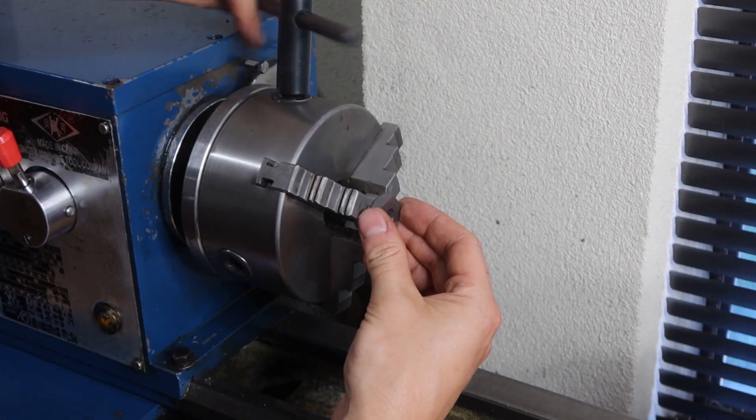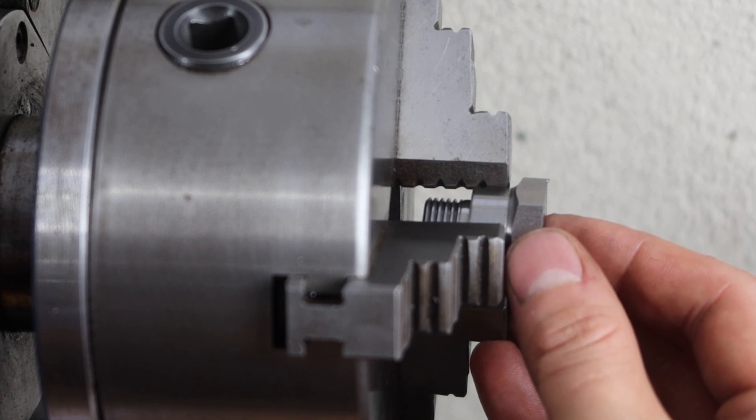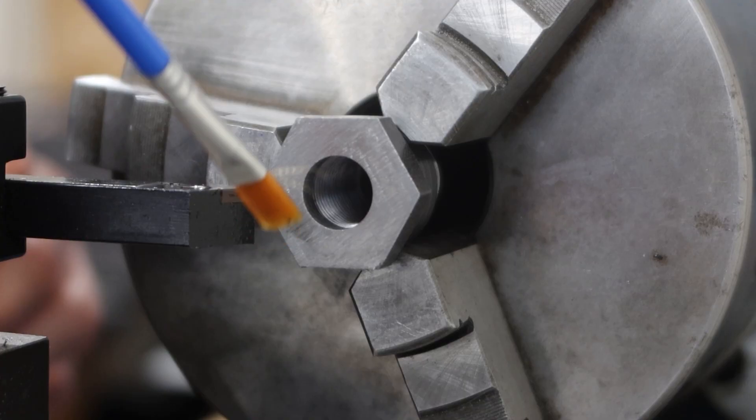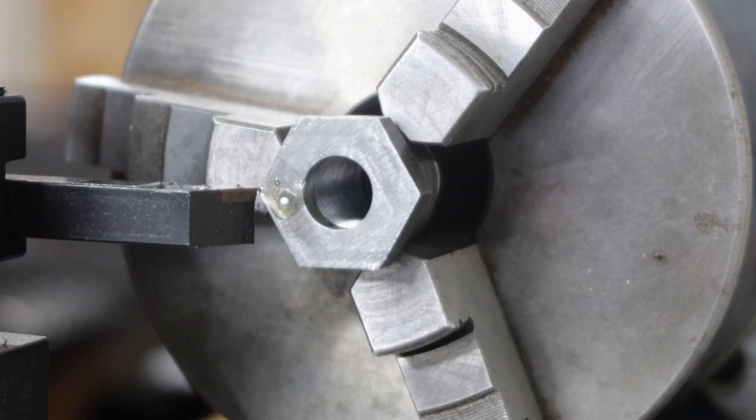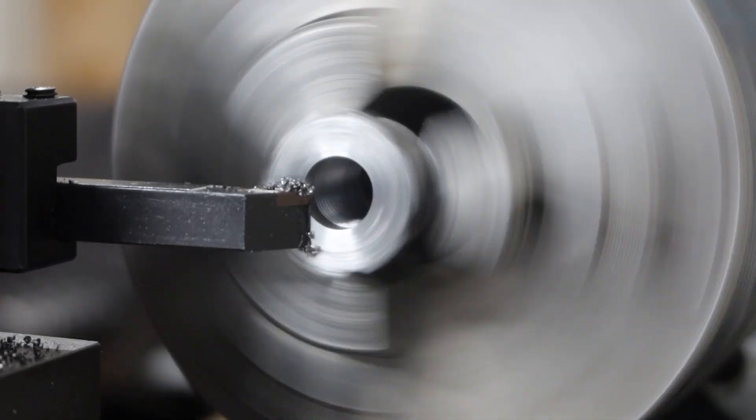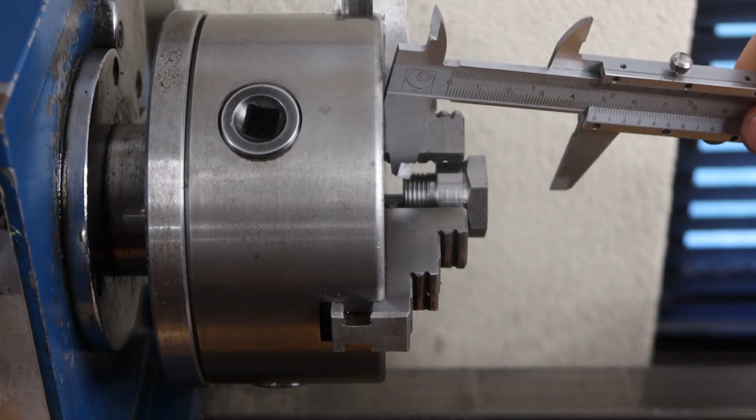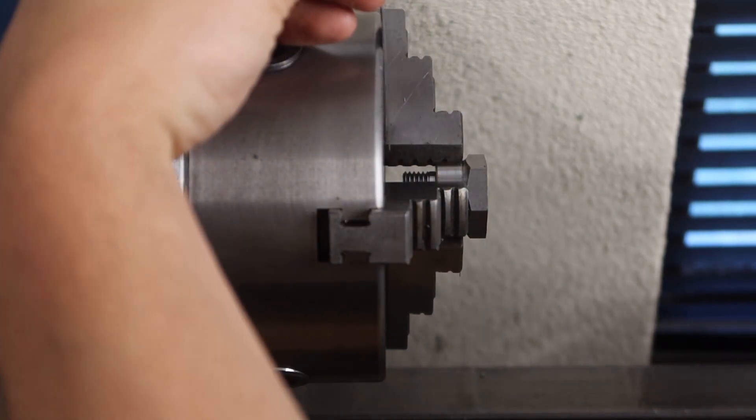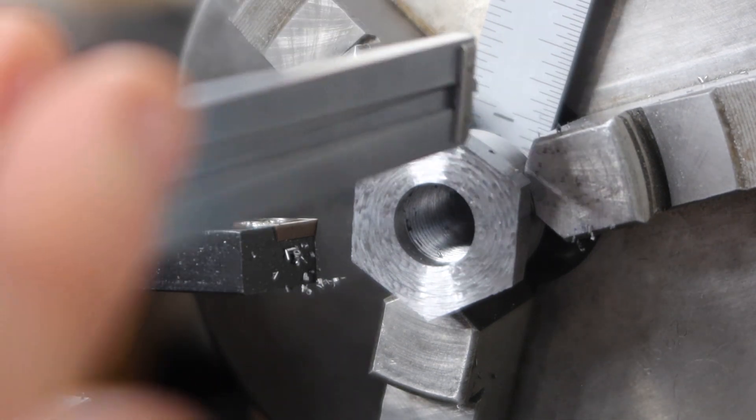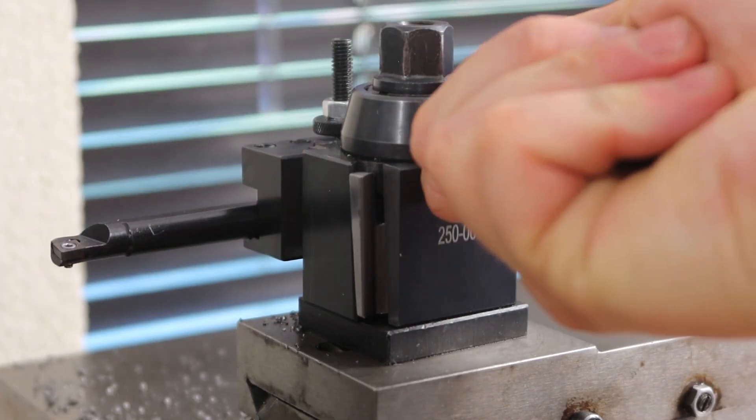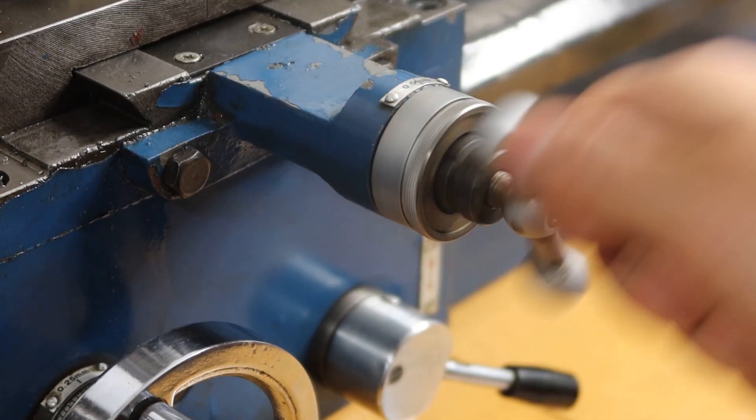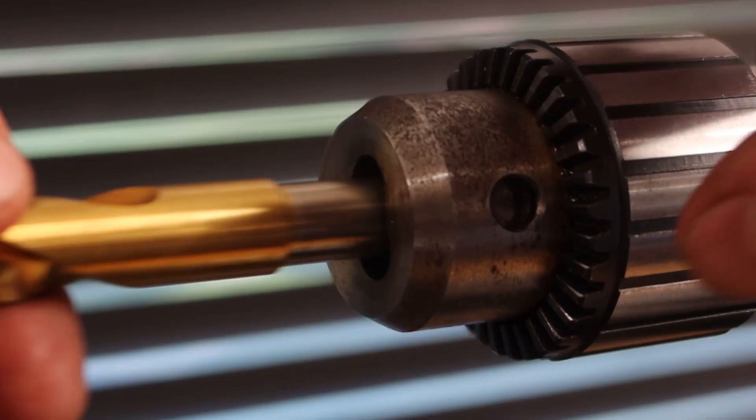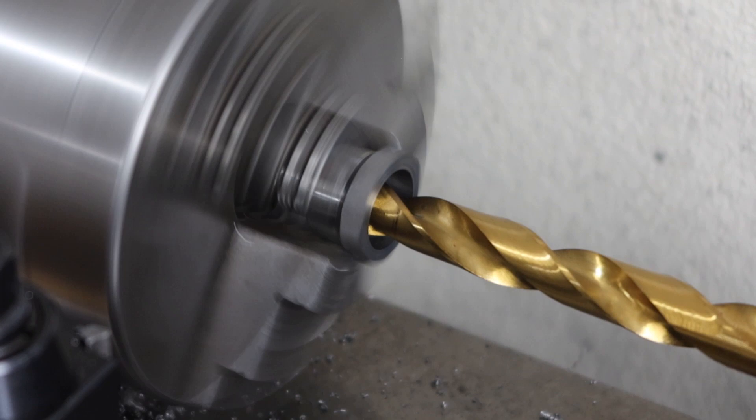I do really like how this is turning out however cutting those threads already has screwed with my order of operations. Originally I was going to use what was to become the M18 thread to mount in the lathe but now that I've already cut it I can't do that. I'm going to have to grip on the slightly smaller surface. But I have managed to get it pretty square and concentricity of the counterbore is not as critical.